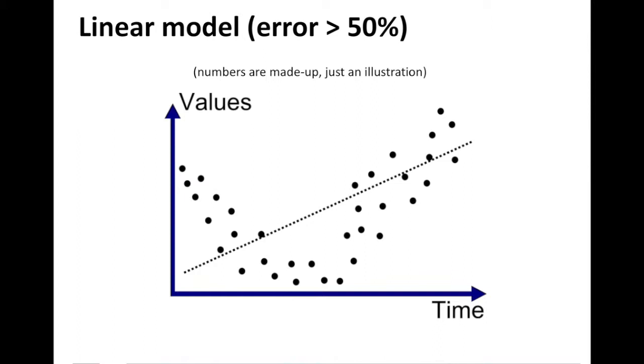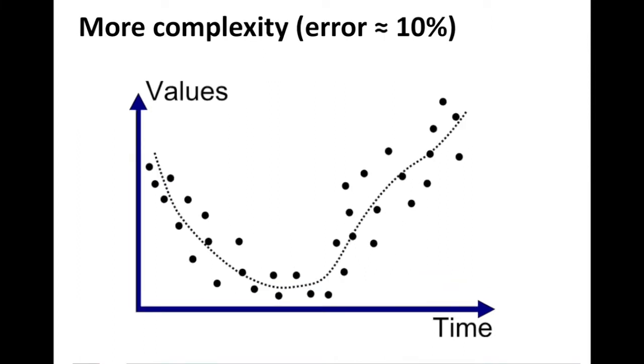Now let's consider a slightly more complex model. So in this model we are considering a curve, a polynomial, that goes, it captures the overall trend in the data. Is it going through all the data points? No. It's going through some of the data points? Yes.